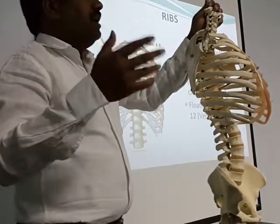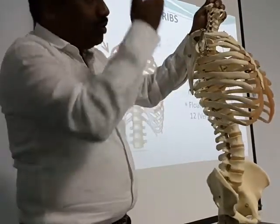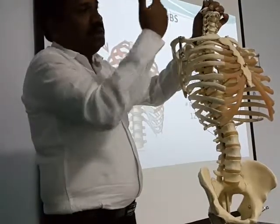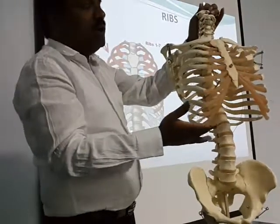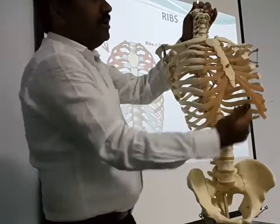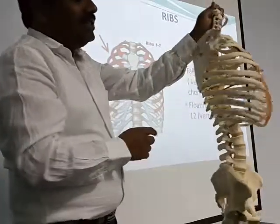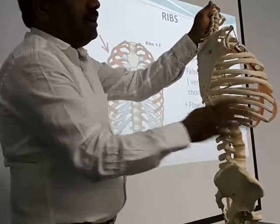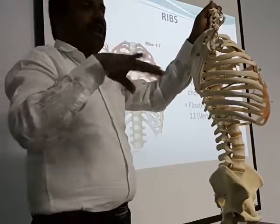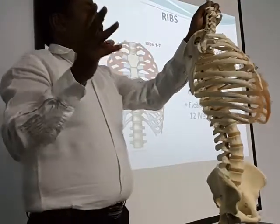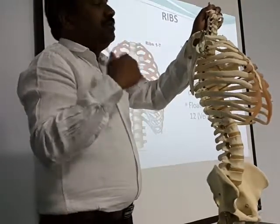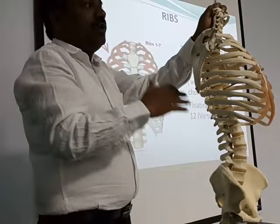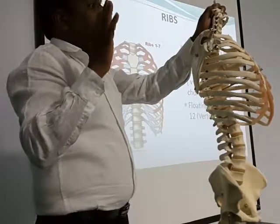From the eighth rib onwards — eighth, ninth, and tenth — they are attached to the costal cartilage of the upper rib, forming the costal margin, which forms the boundary of the thoracic outlet. These are called vertebrochondral ribs. The eleventh and twelfth ribs have a free anterior end; they are called floating ribs or free ribs because they have no anterior attachment.